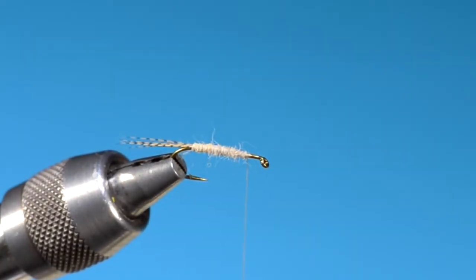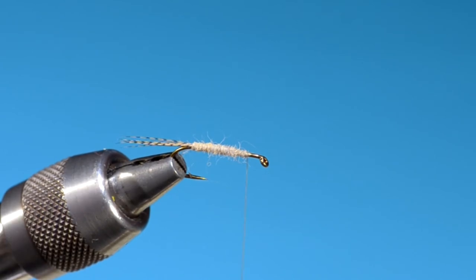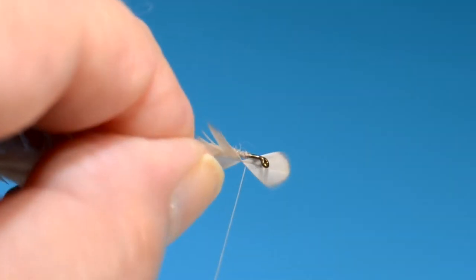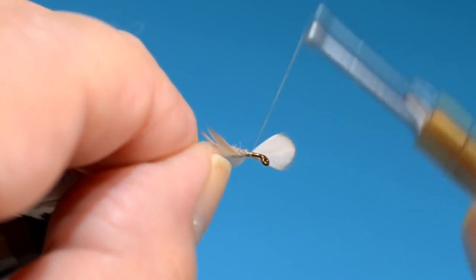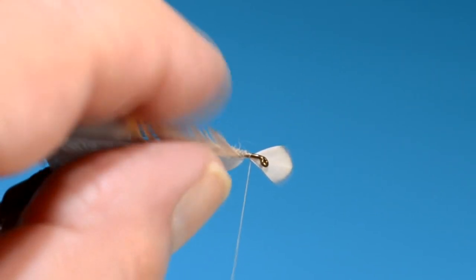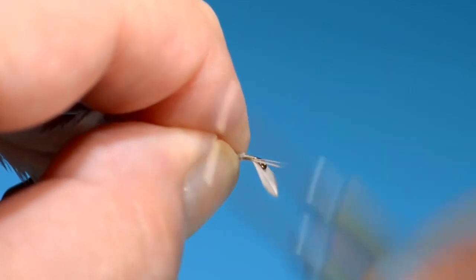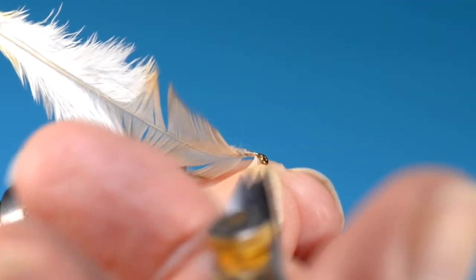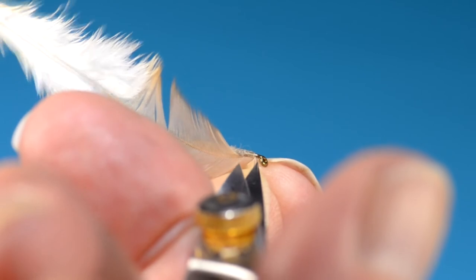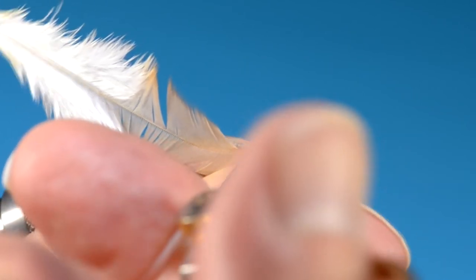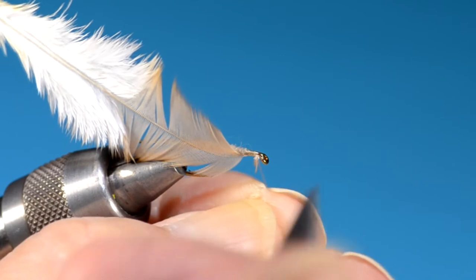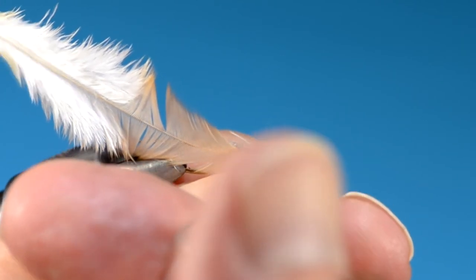The hackle I'm going to use is Whiting Wetfly Saddle Hackle. You can use a lot of things. This is a light ginger. Some tyers tie this fly almost white. I've never done that. I've always tied it more or less tan ginger, if you will, or light ginger.